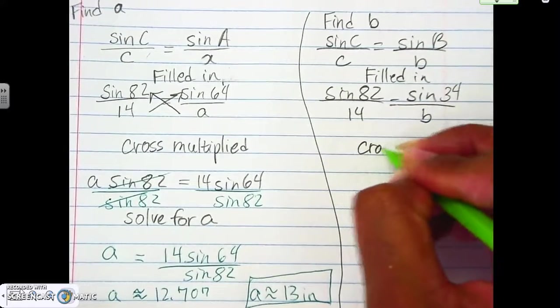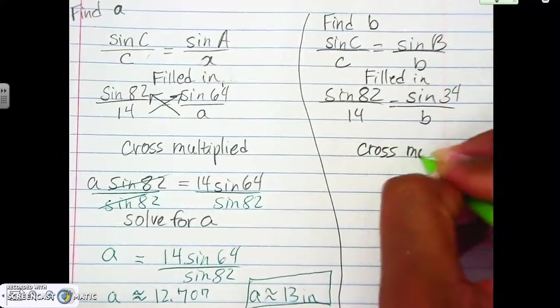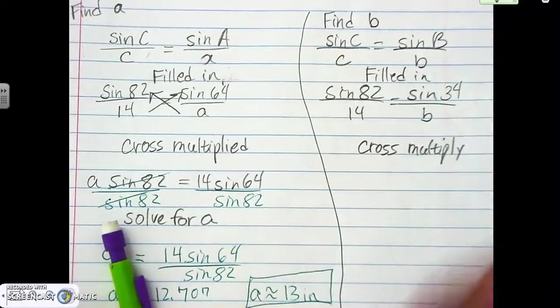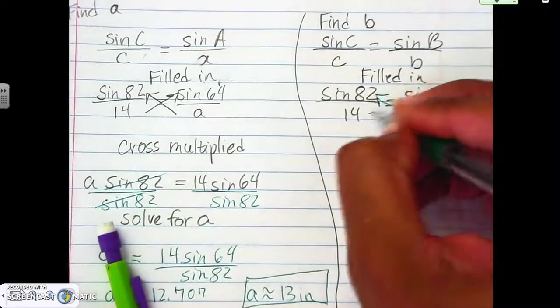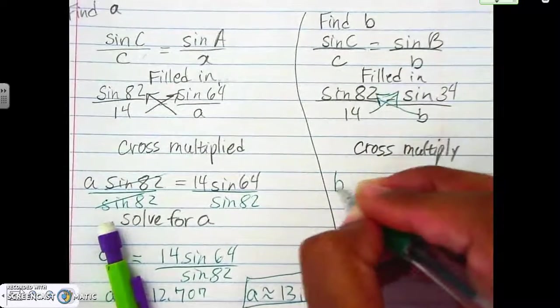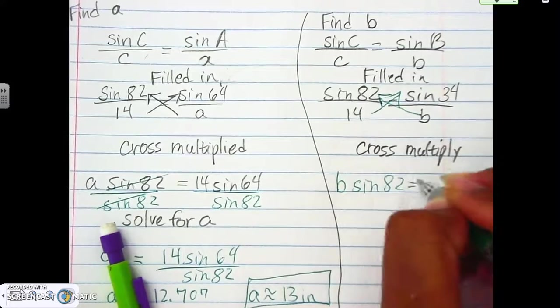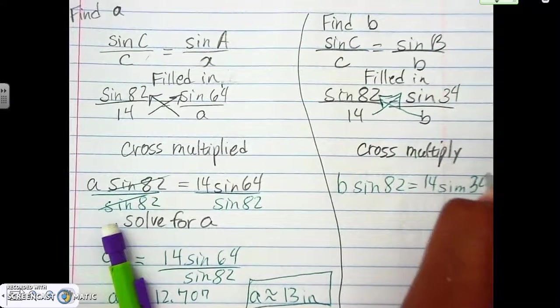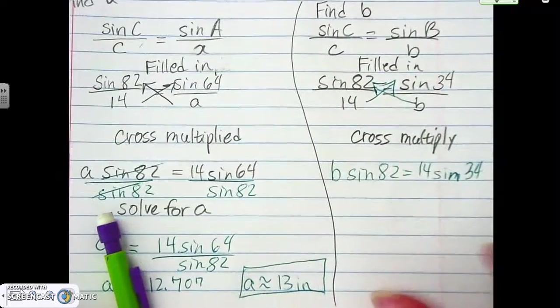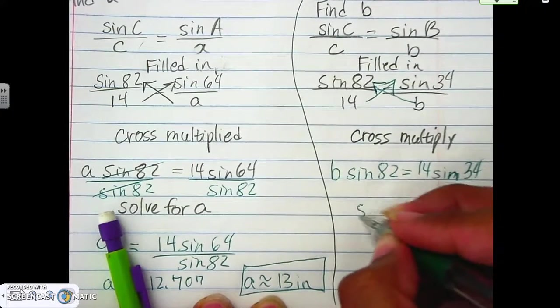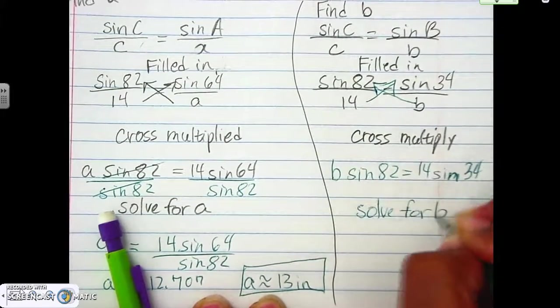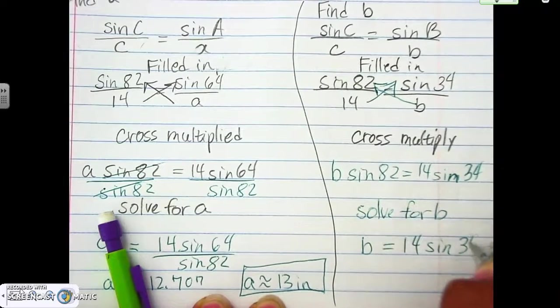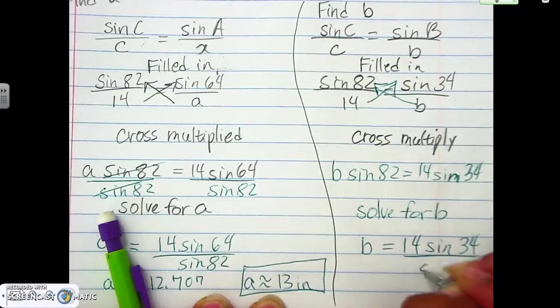Now we're going to cross-reduce, or cross-multiply. Cross-multiply. So it gives us B sine 82 equals 14 sine 34. Not sine. Not sim. Sine. Sorry, my fault. And then we solve for B this time. And so here, we get 14 sine 34 over sine 82.